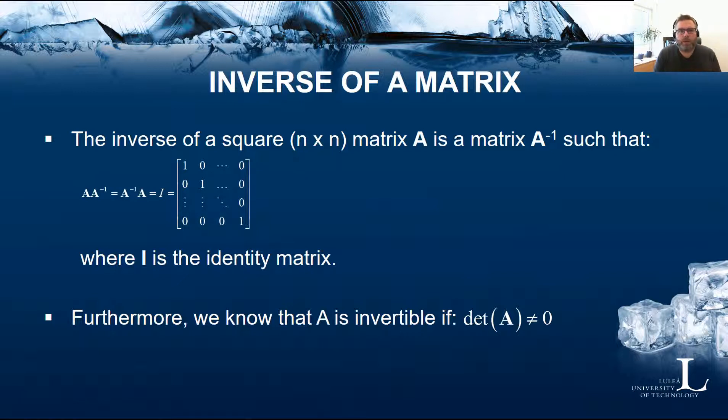Also remember that not all matrices are invertible. The matrix needs first to be a square matrix with equal number of rows and columns. And the determinant of A cannot be 0 for the matrix to be invertible. I will not go into more details about the inverse. You can check this yourself if you like with googling the determinant, for example, if you cannot really remember how this is calculated.